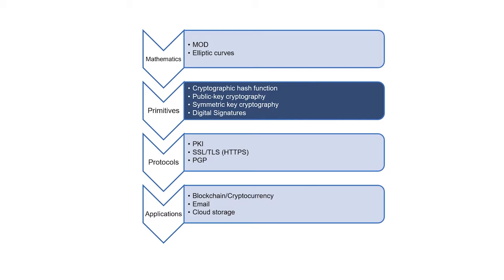The protocols level is where primitives are wrapped up with useful functions and specific usage scenarios. And finally, we see the application level, where primitives and protocols are used in programs providing user experience. It is the level of blockchain and cryptocurrency, and indeed any other user applications. Let's begin with the most basic primitive: the cryptographic hash function.